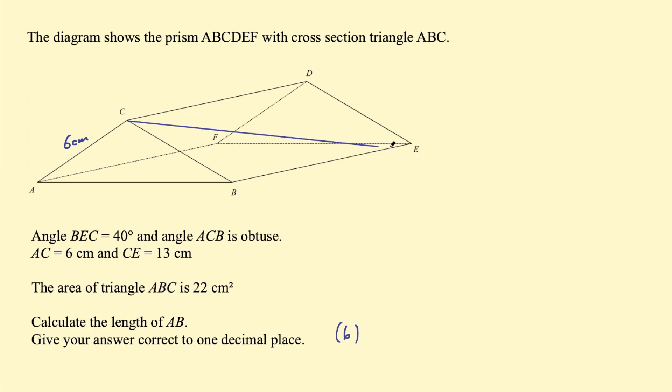So AC is 6 centimeters, CE is 13 centimeters. That is 13 centimeters and the angle BEC is in here. So you have to think three-dimensionally here. This is like a triangular prism. This is a line going across one of its faces and this angle in here is 40 degrees and we are looking for this length AB. So let's label that x. All right, how can we go about finding that length?